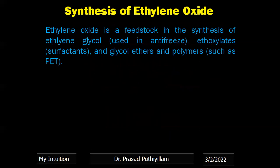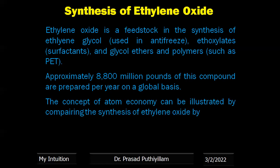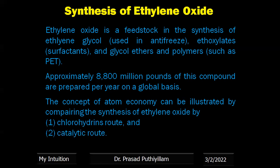First, we will see the synthesis of ethylene oxide. Ethylene oxide is a feedstock starting material used in the synthesis of ethylene glycol, which is mainly used as an antifreeze. It is also used as a surfactant like ethoxylates and glycoethers, as well as in polymers like polyethylene chelate. Approximately 8,800 million pounds of ethylene oxide are prepared globally worldwide every year. The concept of atom economy can be illustrated by comparing the synthesis of ethylene oxide by two methods: the conventional chlorohydrin route, and the catalytic route using a catalyst.